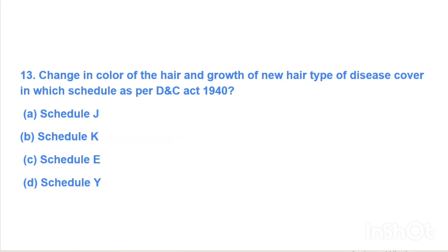Next question: Change in color of hair and growth of new hair — what type of disease is covered in which schedule as per the D&C Act 1940? Option A: Schedule G, Option B: Schedule K, Option C: Schedule E, Option D: Schedule Y. Answer is Option A, Schedule J.